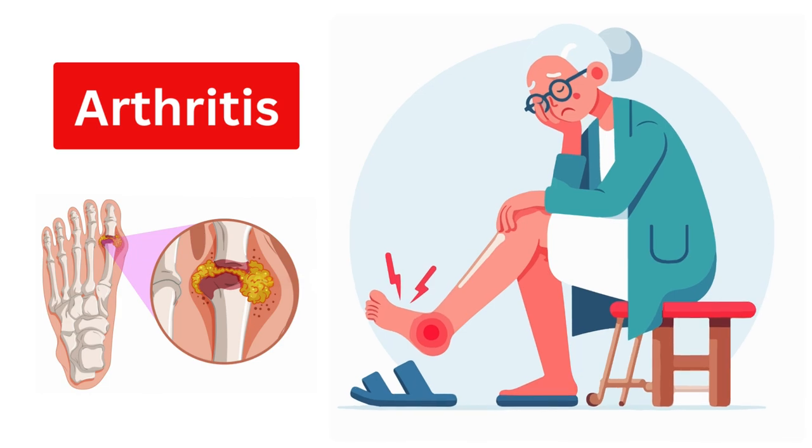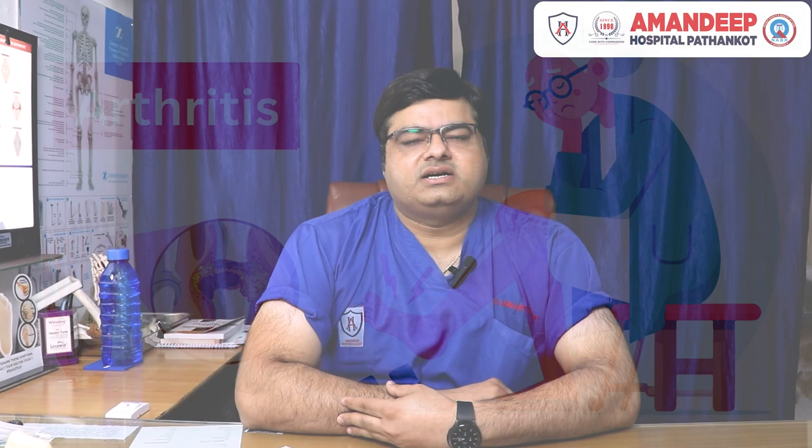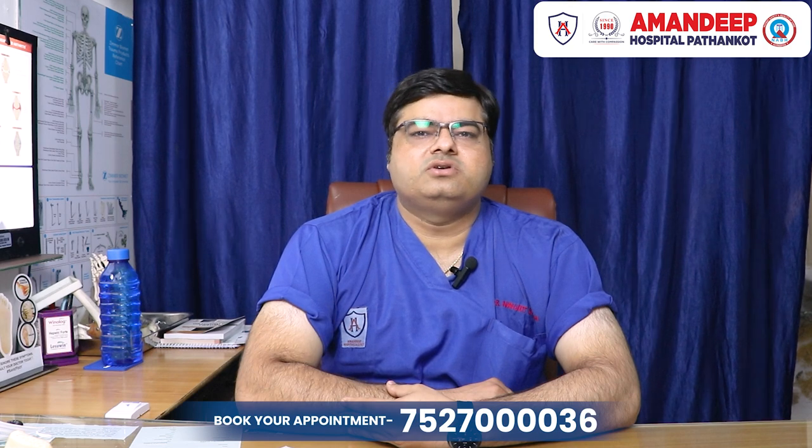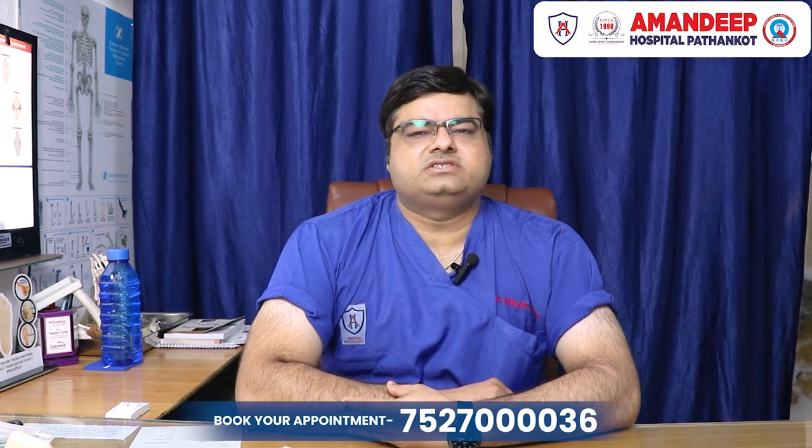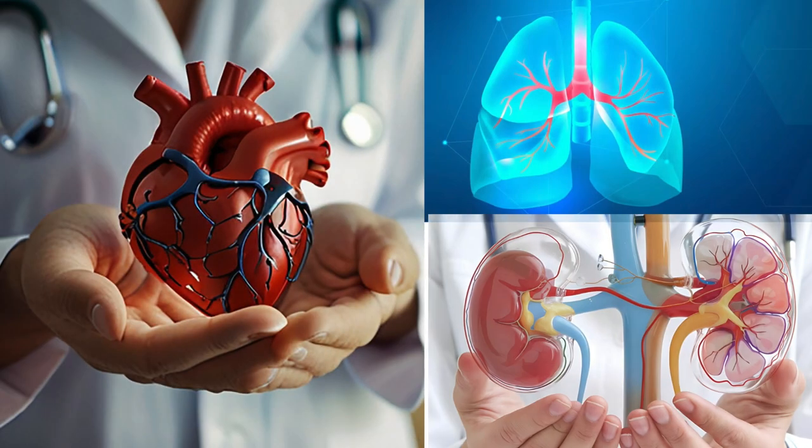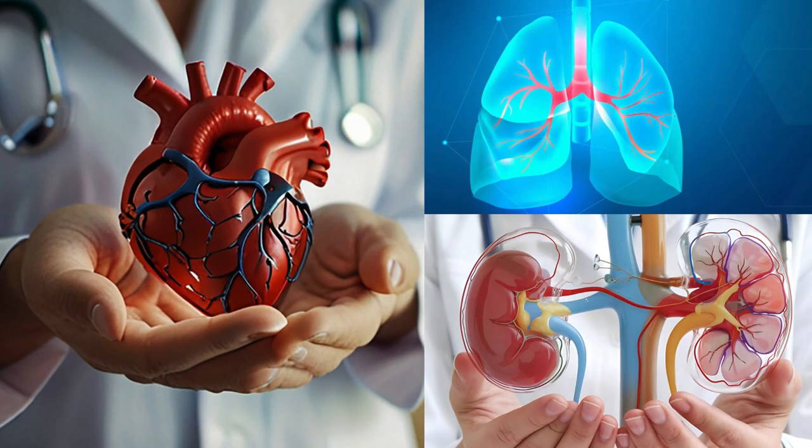Rheumatoid arthritis is an autoimmune disease that has no clear cause. Our immune system attacks and destroys our own cells. The most commonly attacked tissues are soft tissues, cartilage, and bone. This disease can also involve the heart, lungs, and kidneys.